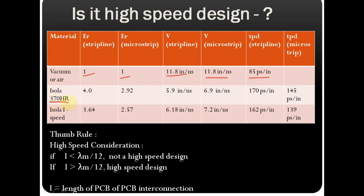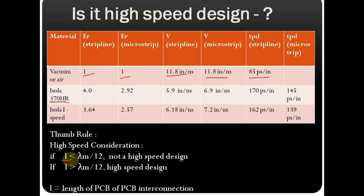The thumb rule for the second approach says: if L is less than λm / 12, this is not a high speed design. If L is greater than λm / 12, it is considered a high speed design. Here L is the length of PCB interconnection.